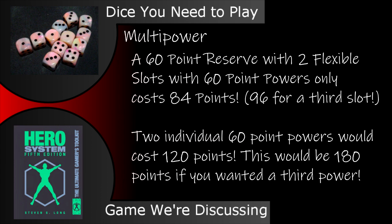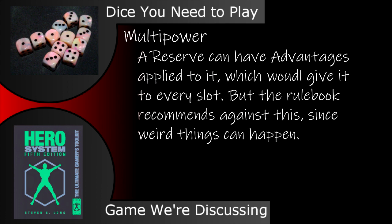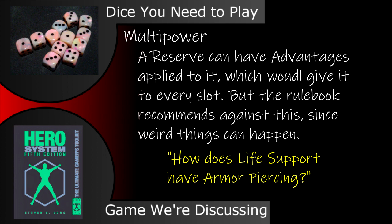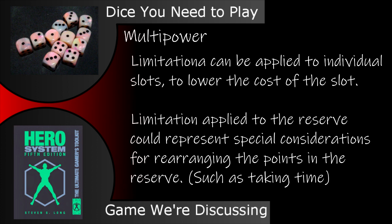A third power at 60 points would make the framework cost 96, compared to three individual powers at 180. While advantages can be applied to the reserve to make them apply to all slots, the rulebook recommends instead applying advantages to individual slots, mostly because there are weird things to consider — such as how do you make life support have armor piercing? If you absolutely must allow advantages on a reserve, the answer is you don't apply them if they don't make sense. Limitations, however, are a little bit more forgiving. They can be applied to one of the slots to lower the cost of the slot, or they can apply to the reserve, such as taking extra time to redistribute the reserve.